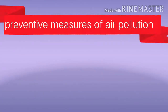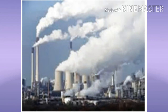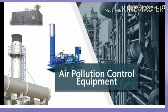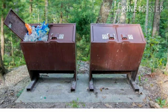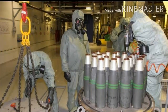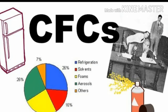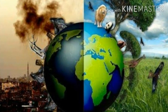Preventive measures of air pollution: 1. Smoke emerging from factories contains harmful particles, hence pollution controlling machinery should be used. 2. Proper disposal of stinking waste generated in cities. 3. Control on atomic tests, chemical weapons etc. 4. Control or ban over CFC, i.e., chlorofluorocarbon production.